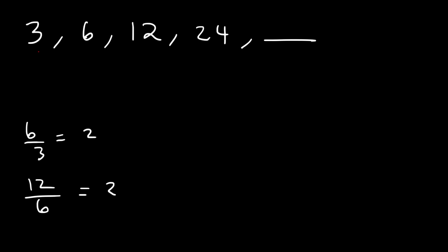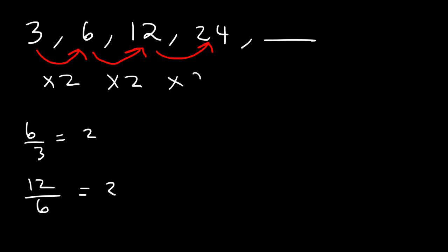To go from 3 to 6, we need to multiply by 2. 3 times 2 is 6. And if we multiply 6 by 2 that will give us 12. And then if we multiply 12 by 2 it will give us 24. So this is what's known as a geometric sequence, because the numbers differ by multiplication or division, as opposed to addition and subtraction. To find the next number we've got to multiply 24 by 2, which will give us 48. And then 48 times 2 is 96, and so forth.